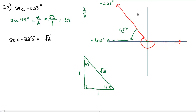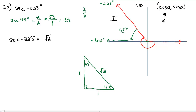Is secant going to be positive or negative? Secant shares the same sign as cosine. To figure that out, remember that ordered pairs are represented by cosine of theta comma sine of theta, so cosine always matches up with x-values and sine always matches up with y-values. We ask ourselves: is cosine of theta going to be positive or negative in the second quadrant?